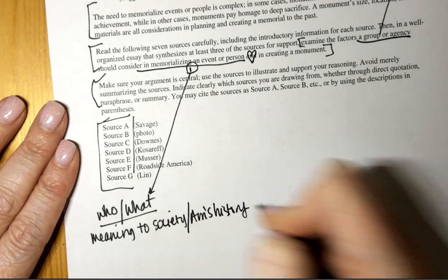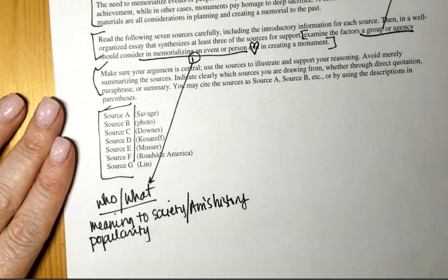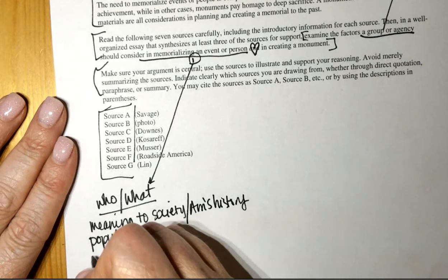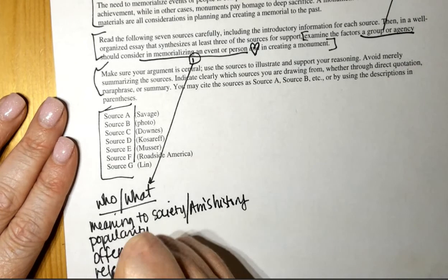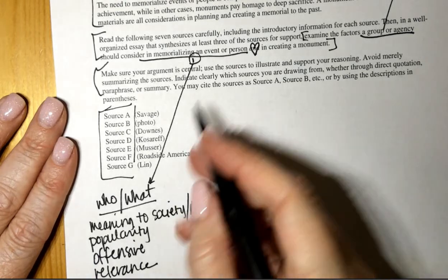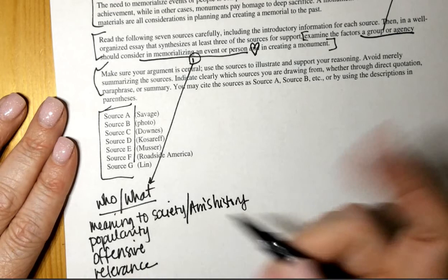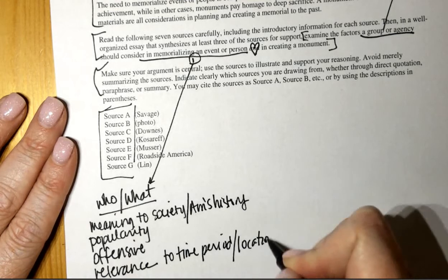So examine the factors a group or agency so this is going to be what I call my persona. So as I'm writing this paper I am writing this as if I am a group or agency having to consider stuff right I'm not writing it as a high school student I am writing it as if I am part of one of those groups or the agency making decisions okay. Now what factors should we take in memorializing so when we choose the who or the what this is my planning that I would do before so when we choose the who or the what which is this first part right what do I need to consider. Okay so the meaning to what. Okay what else do I need to consider when I'm picking somebody. Popularity.